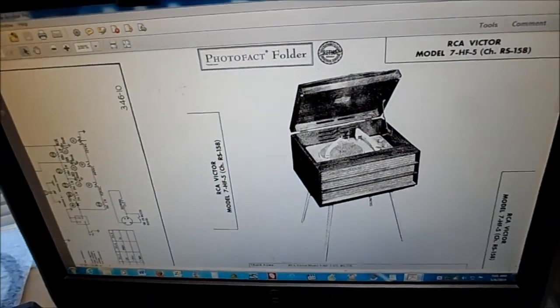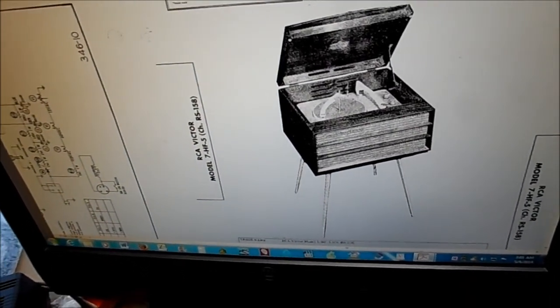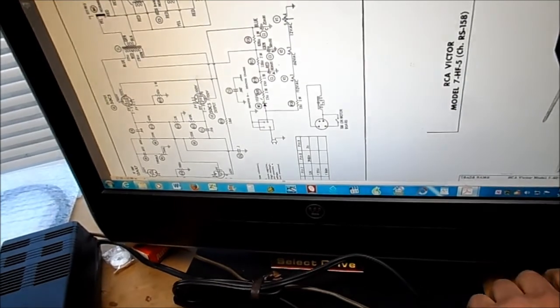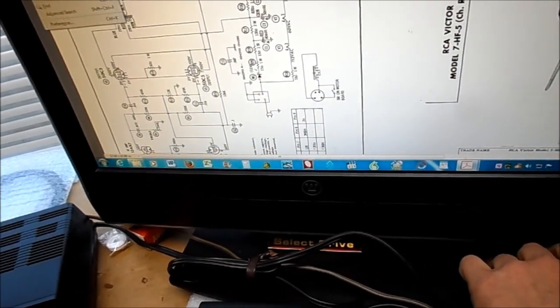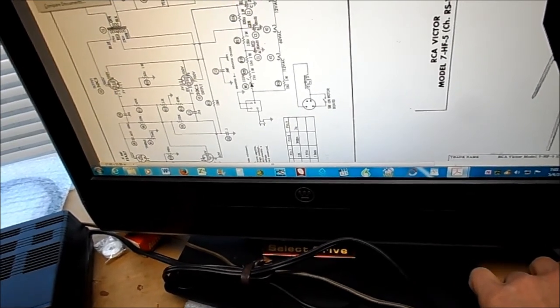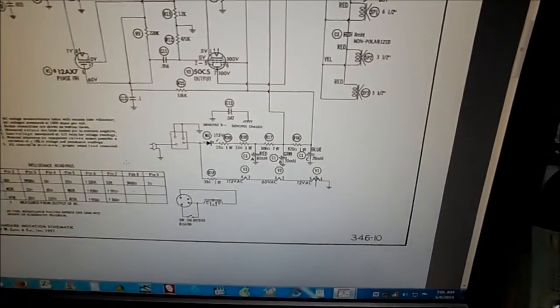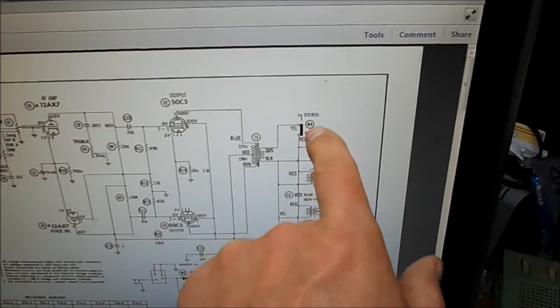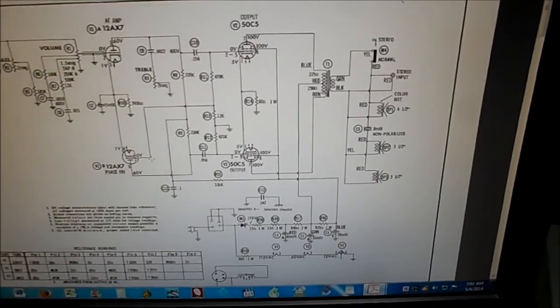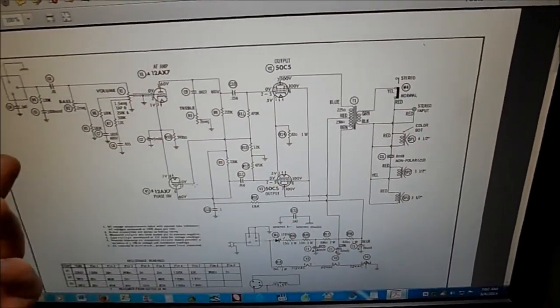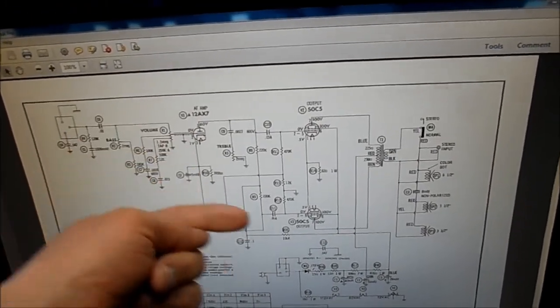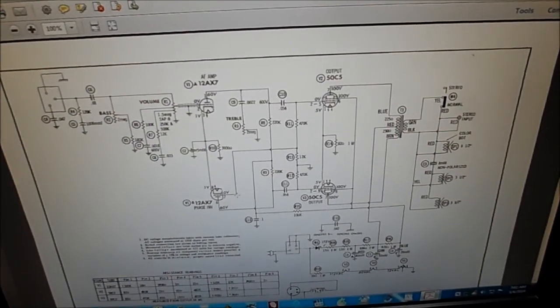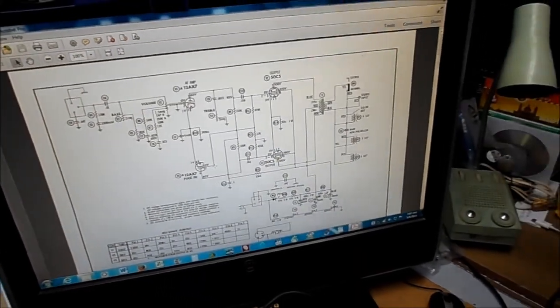Over here I have the Sams on a similar model for the amplifier. It's a 50C5 setup in push-pull with a 12AX7 as the phase inverter and the preamp. What threw me with the stereo mono switch is that when it's in stereo, it's nothing more than just a speaker cabinet. And when it's in normal, it acts as a phonograph. So there's your 12AX7 phase inverter for the push-pull and the preamp for the cartridge.